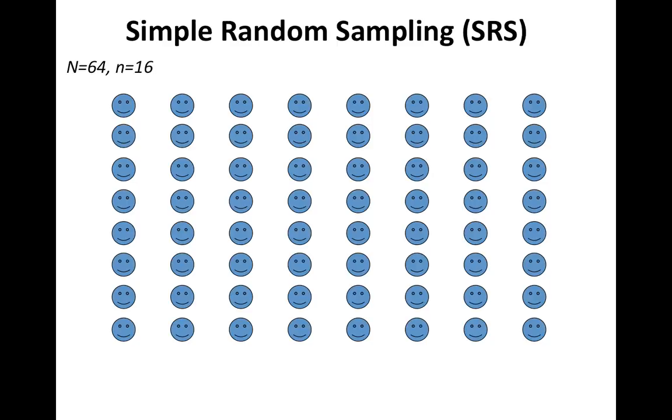Let me show you graphically what that means before we state the definition in words. Suppose that our sample population has 64 units in it. I'm using the capital N to represent the larger set of units, and I'm interested in selecting a sample of 16. I have the resources to contact only 16 people out of these 64. So there are my 64 people.